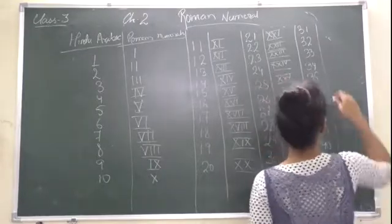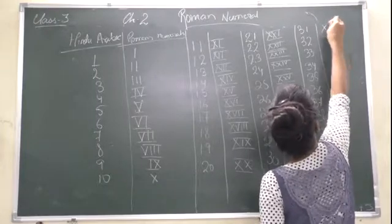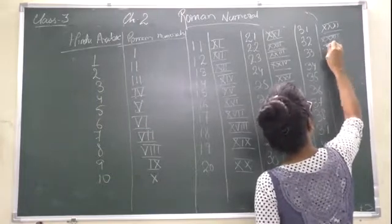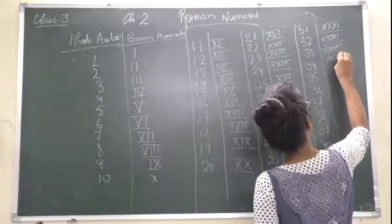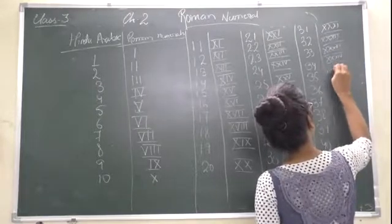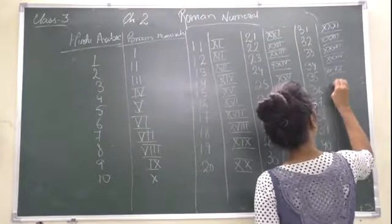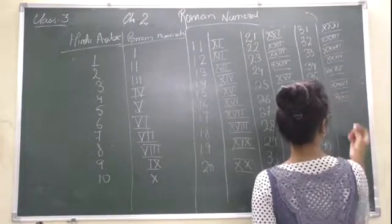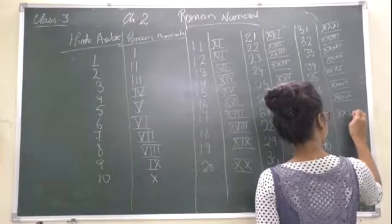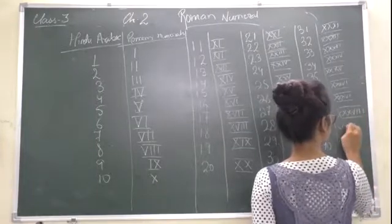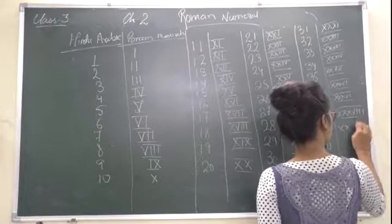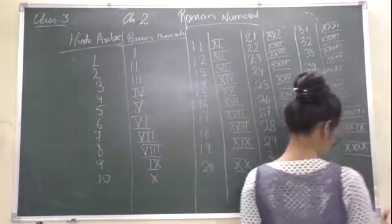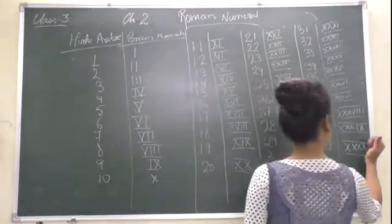Okay, so it is written as XXXI, XXXII, XXXIII, XXXIV, XXXV, XXXVI, XXXVII, XXXVIII, XXXIX, and then XL. Okay, sorry, 40 is written as XL.